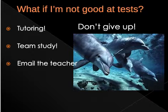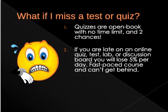If you're not good on tests, know that they're open book and open note — you can go and look. Each quiz, you will have two chances to take it. The system is set to keep your highest score, so you can take the quiz, see how you're doing, and then go back and study the specific topics you missed. There's no time limit. If you're late on any online quiz, test, lab, or discussion board, you'll lose 5% per day that you're late. Because this is a fast-paced course, we really can't get very far behind.